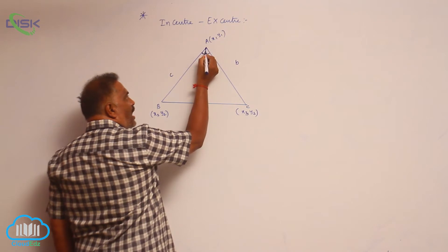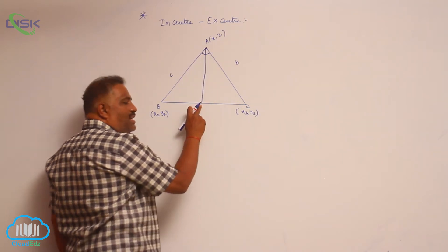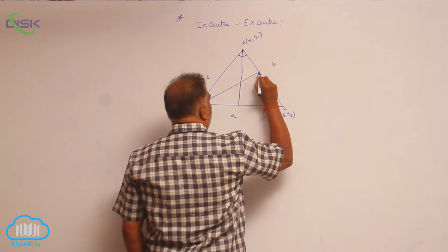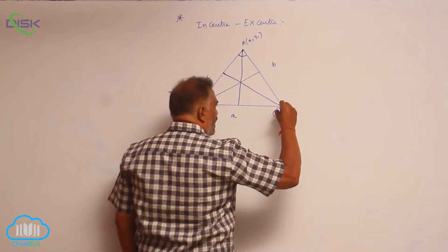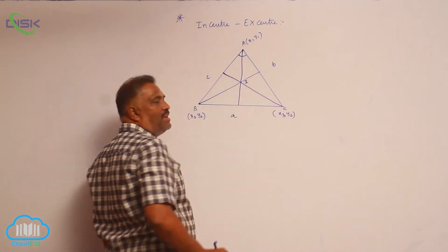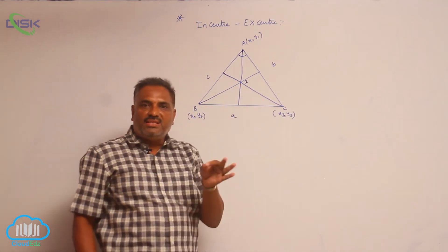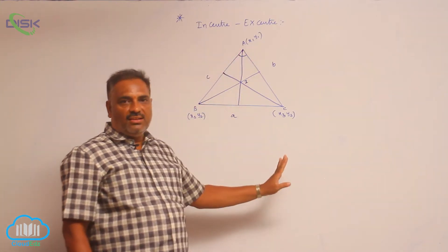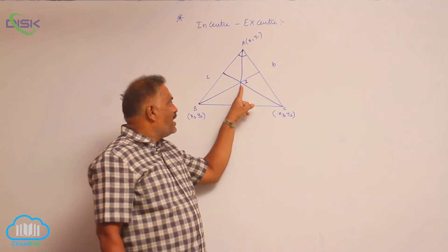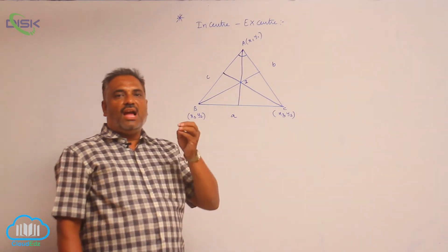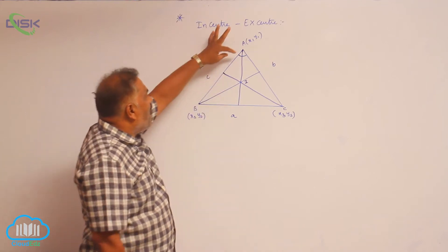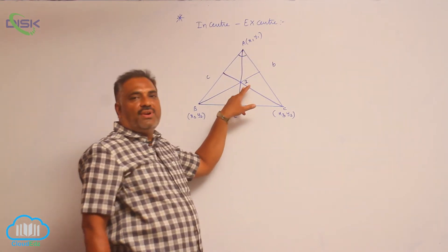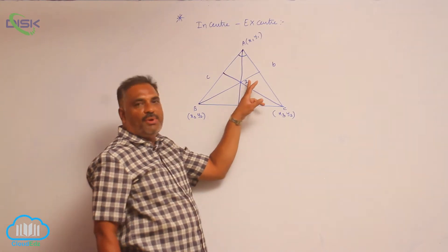If you draw an angular bisector, note that this need not be the midpoint of the base. In the same fashion you can draw one more angular bisector and one more angular bisector. You are able to see one point here, I. This is the point of concurrence of internal angular bisectors of the angles of a triangle. That point of concurrence is called the incenter, denoted by I.